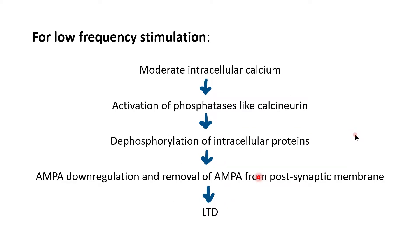When the frequency of stimulation is low compared to what produces LTP, there will be only a moderate increase in intracellular calcium. As a result, there will be specific activation of phosphatases — contrary to protein kinases — such as calcineurin. In the case of LTD, phosphatases like calcineurin are activated, leading to dephosphorylation of intracellular proteins and AMPA downregulation and removal of AMPA from the post-synaptic membrane. This is the basis of long-term depression.